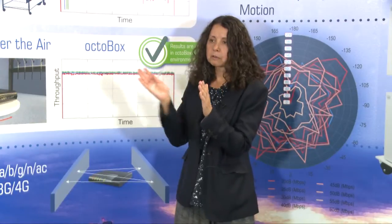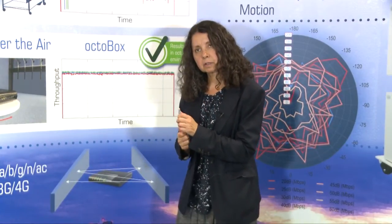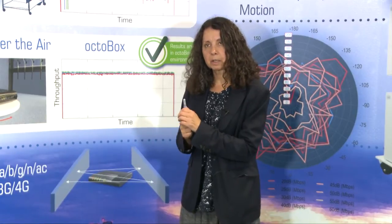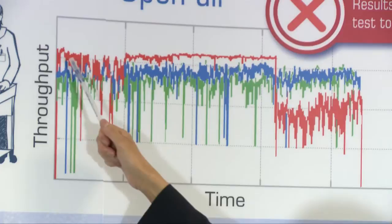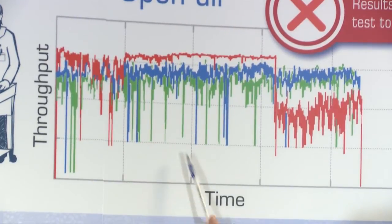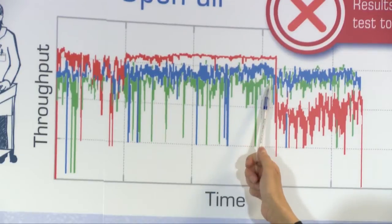But we can emulate reflections with a device we call multipath emulator. We can emulate traffic, or we can replay captured traffic and interference of other interference like radar, Bluetooth, microwave ovens, you name it.